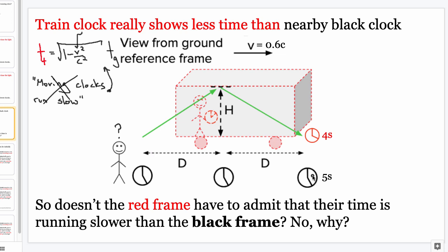How does red get out of this? Red doesn't think they're moving. They look at their clock and see it reads four seconds when the light hits the ground. Now red is right in front of a black clock that black says reads five seconds. Red looks at this black clock and agrees — it reads five seconds at the moment the light hit the ground. Black is feeling good: 'Your clock reads four seconds, mine reads five seconds, therefore you're the one moving and I'm at rest.' But red will not concede.